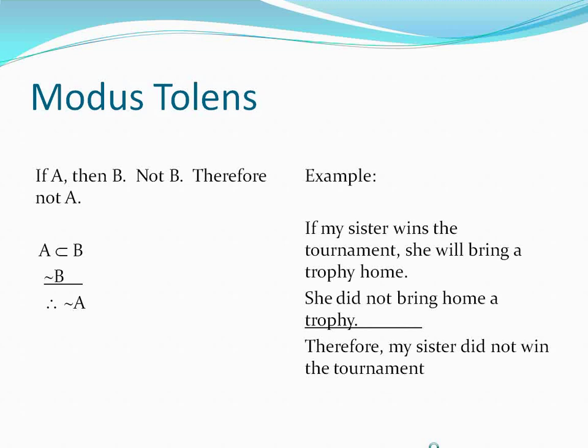Let's look at the elements of this argument. We have an 'if,' but you'll notice there is no 'then' — because in English, the 'then' is often implicit. 'If my sister wins the tournament, she will bring home a trophy' flows naturally, and we know the 'then' is implied even if it isn't explicit. 'My sister wins the tournament' is a natural A for this argument. In the conclusion, the 'not' is a separate element — a denial of premise A — rather than part of the premise itself.